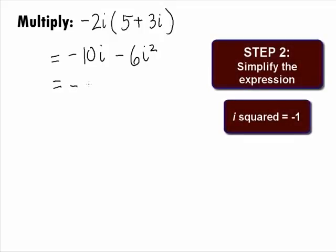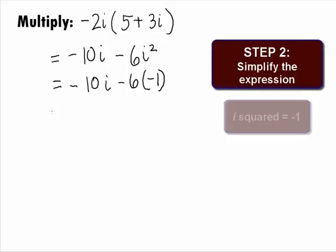In Step 2, we want to simplify the expression. Since i squared equals negative 1, we can rewrite this as negative 10i minus 6 times negative 1. This will simplify as negative 10i plus 6.